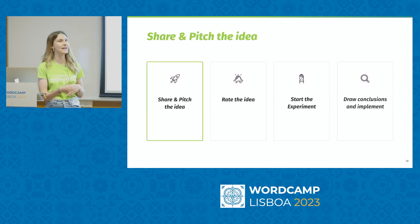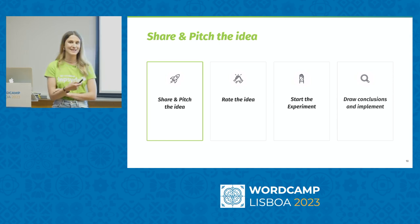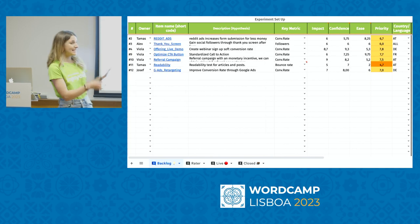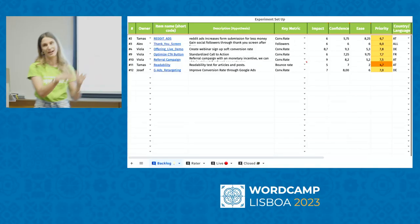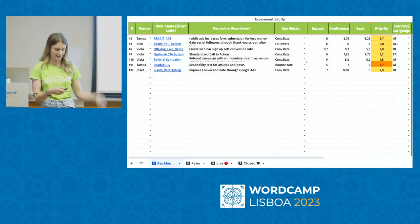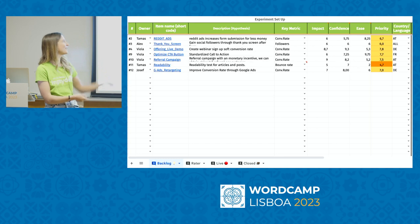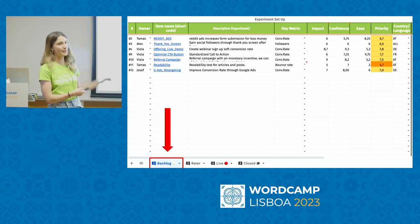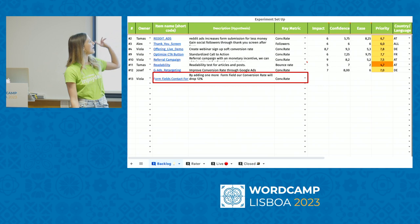I'll start with the first step: share and pitch the idea. Coming back to our contact form example — you can see it's a simple Excel sheet. It looks a little overwhelming at first, but the whole marketing team summarized all our ideas here in a structured way. If I have the idea of adding one more form field, I put it into the backlog with a short item name and a description.